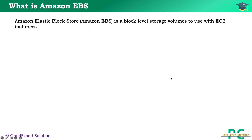Let's start with what is Amazon EBS. Amazon EBS, or Elastic Block Store, is a block level storage volume that you can attach with an EC2 instance. It could be your boot volume or it could be a secondary volume. EBS volumes behave like raw, unformatted block devices. EBS is a network volume and you can mount these volumes with your EC2 instances. You can create a file system on top of these volumes, or use them as a block device such as a hard drive.